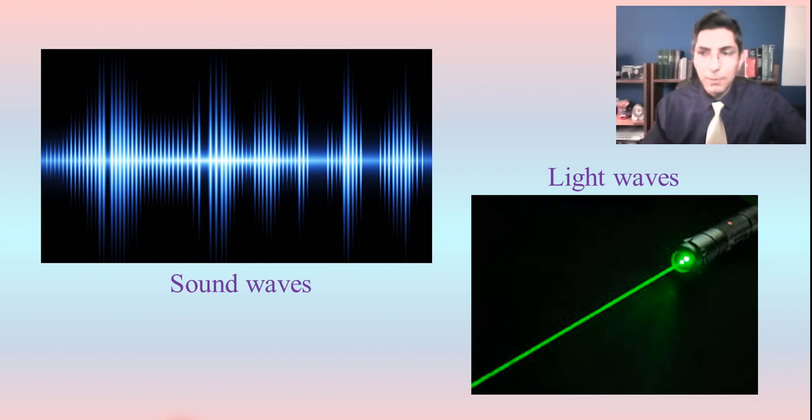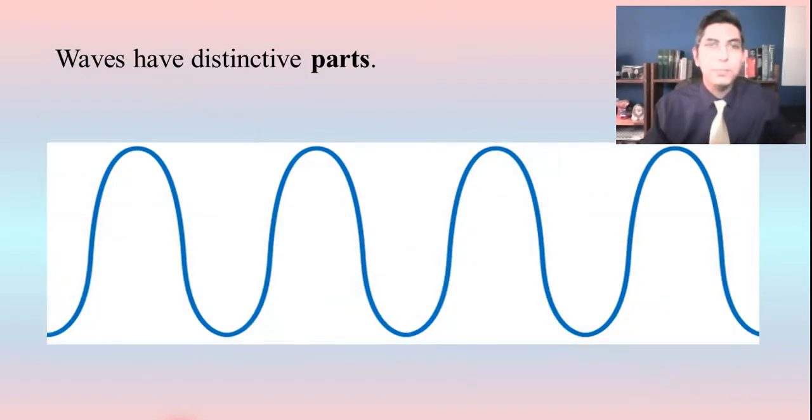I'd like to take a couple minutes to talk about the parts of a wave. So here's this picture that we put up here a few minutes ago about just a typical wave. Well, waves have very distinctive parts. For example, if we look at the top of the wave, this very top peak part right here, that's called the crest of the wave. So as you can see here, the wave that we have shown on the screen, we have four different crests on this wave.